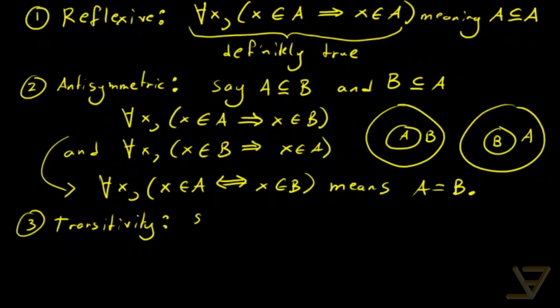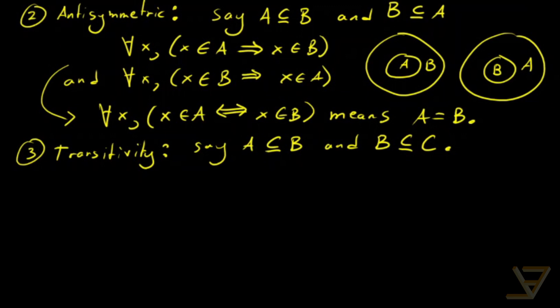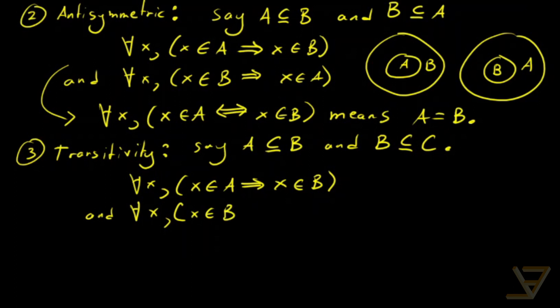And finally we're going to prove transitivity. We are assuming that A is a subset of B, and B is a subset of C. So that means that for all x, if x is in A, then x is in B. And for all x, if x is in B, then x is in C. Now we're going to use transitivity of implication.